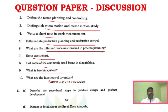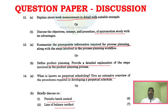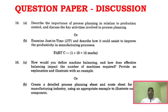For Part B of the 2024 question paper: procedural steps in product design and product development, break-even analysis, work measurement in detail, micro motion study for 13 marks, and Unit 3 prerequisites and information for process planning and product planning.